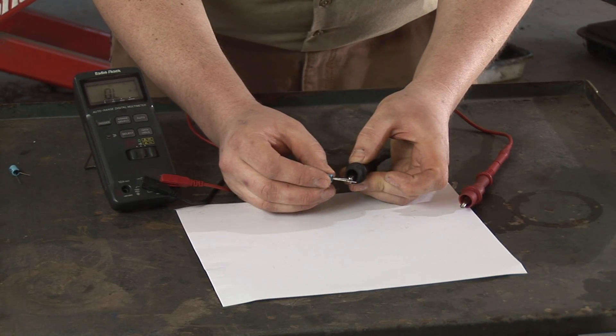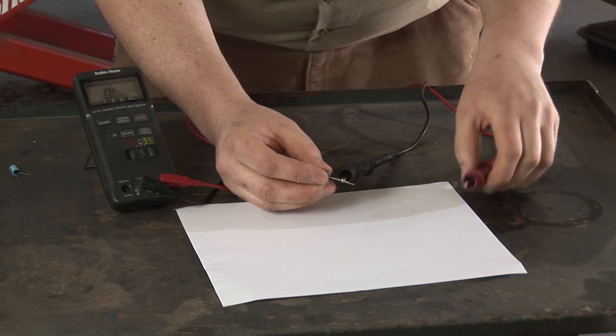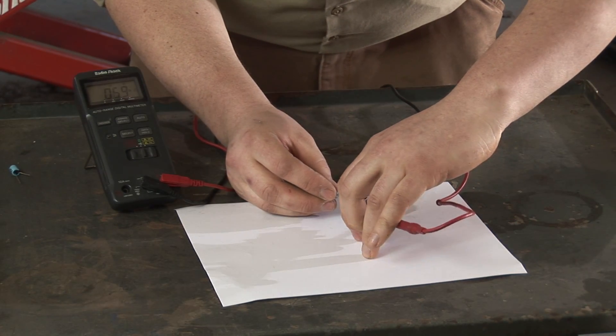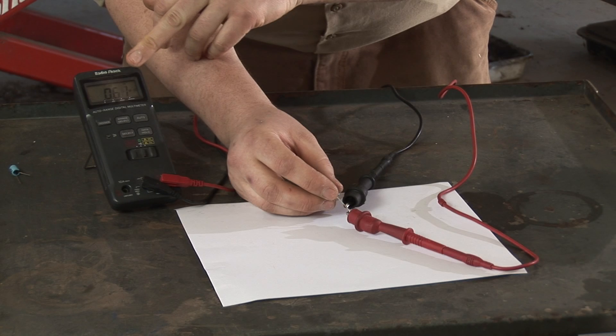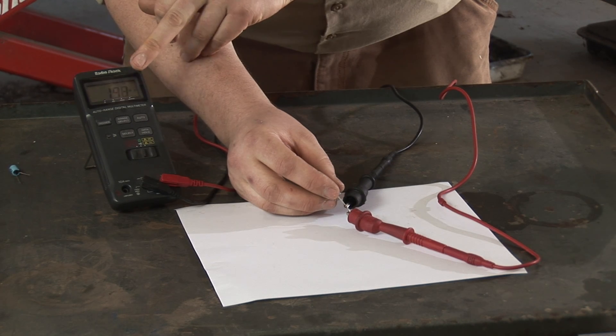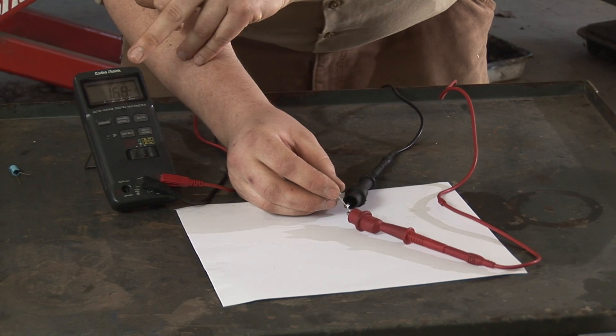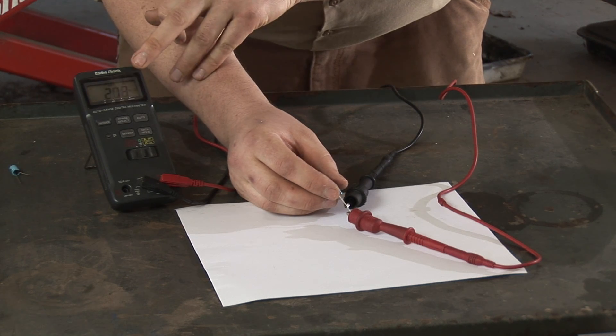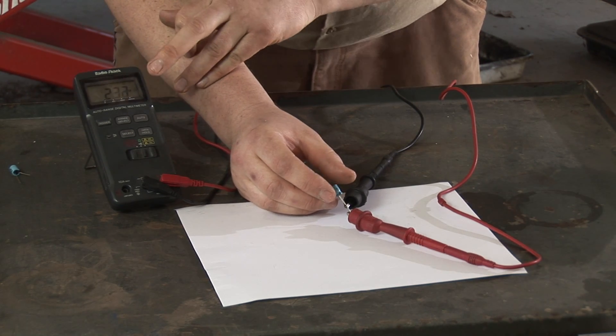Once it's discharged, you hook up your negative lead to the negative side of the capacitor, and your positive lead to the positive side, and what you will see is that the resistance will increase as the capacitor slowly takes a charge from the test voltage coming from the meter. If you see this resistance increase, then that means that the capacitor is functional.